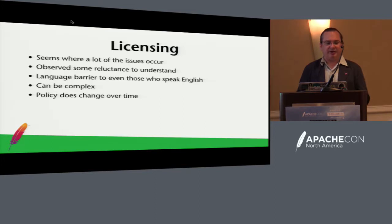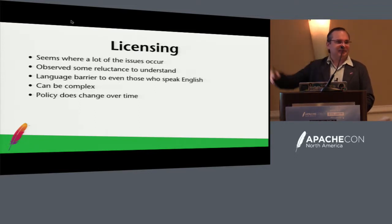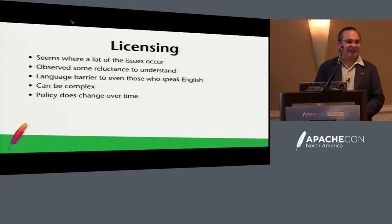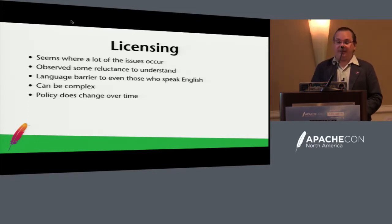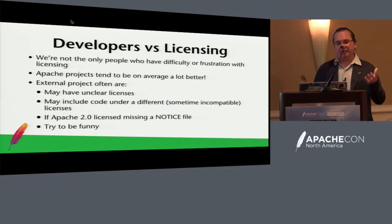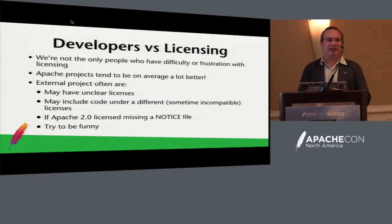Licensing is where a lot of issues seem to occur. Most of us are just developers and don't really want to understand licensing — it's all too hard and complex. It's certainly a language barrier as well; even for people who speak English it can be hard to understand what something actually means. Policy can also change over time. That said, Apache tends to be much better on average than some random project on GitHub. Including stuff from GitHub into your project can cause problems.